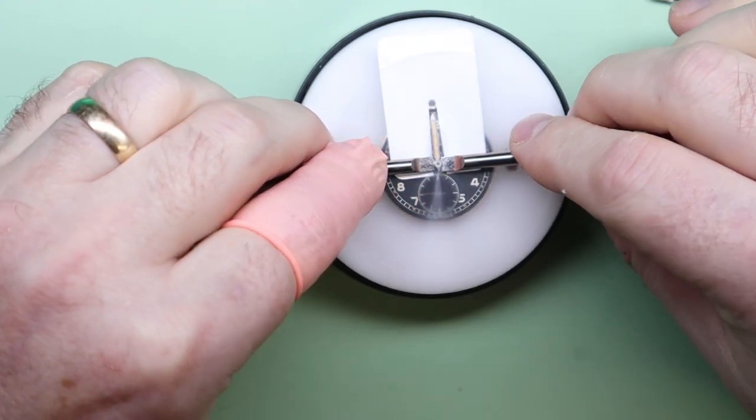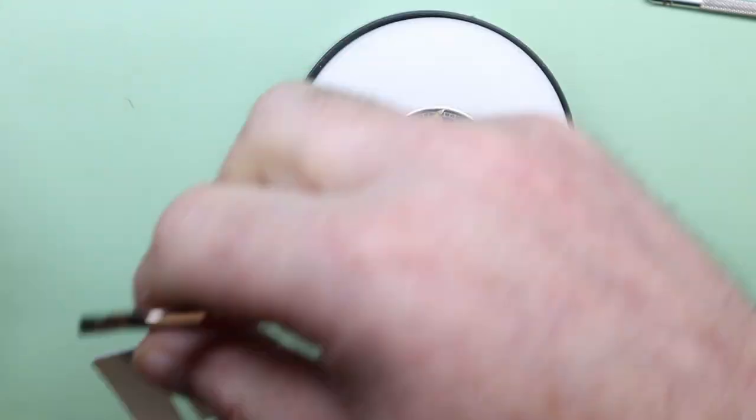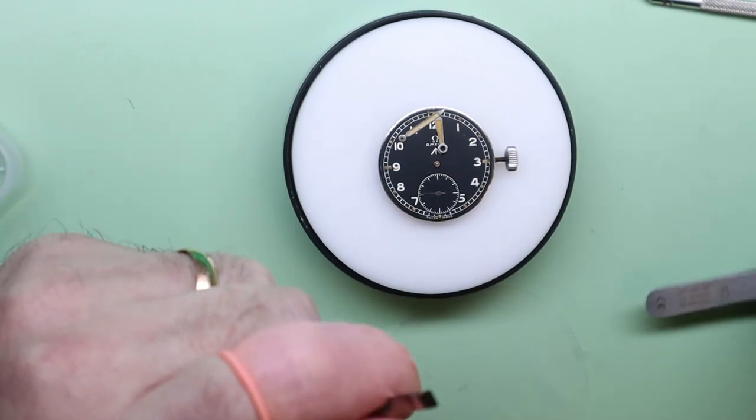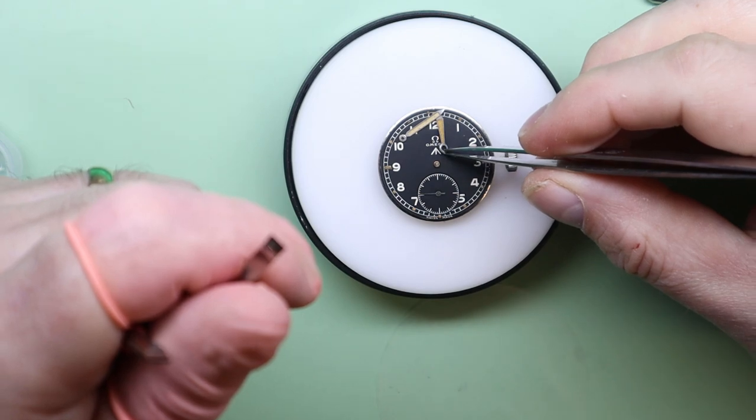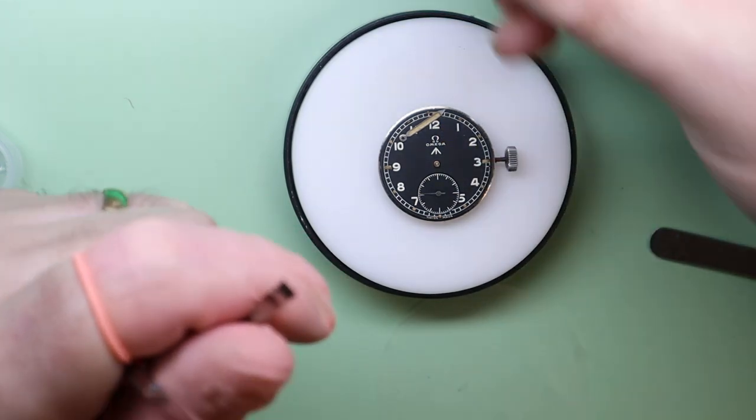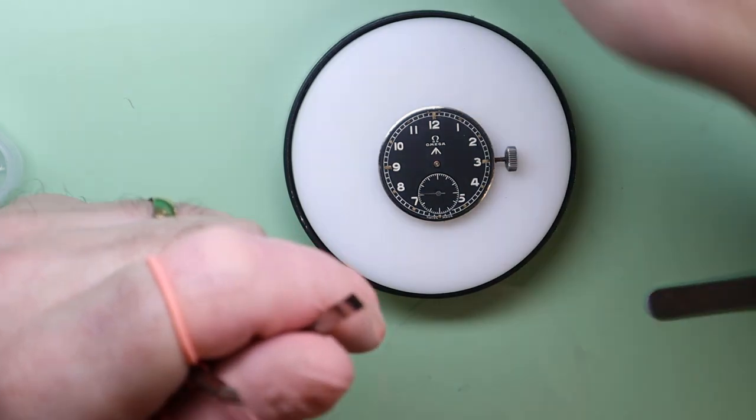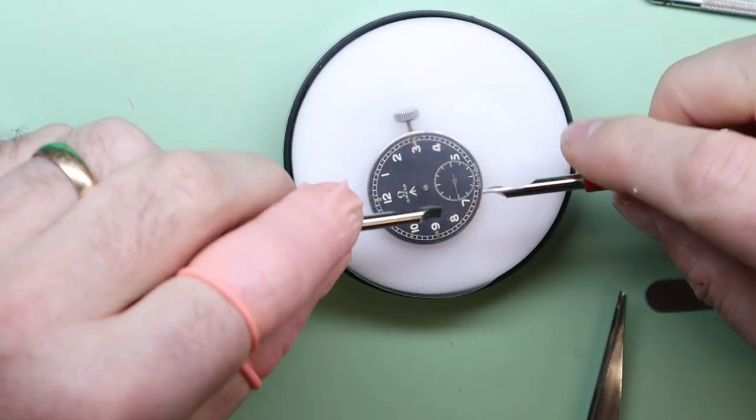So we can use the hand levers to lift off those hands. Always take great care when removing the hands. The tweezers I'm using have mirror polished tips so as not to scratch or damage the dial or the hands. Then we can remove the sub dial hand as well.